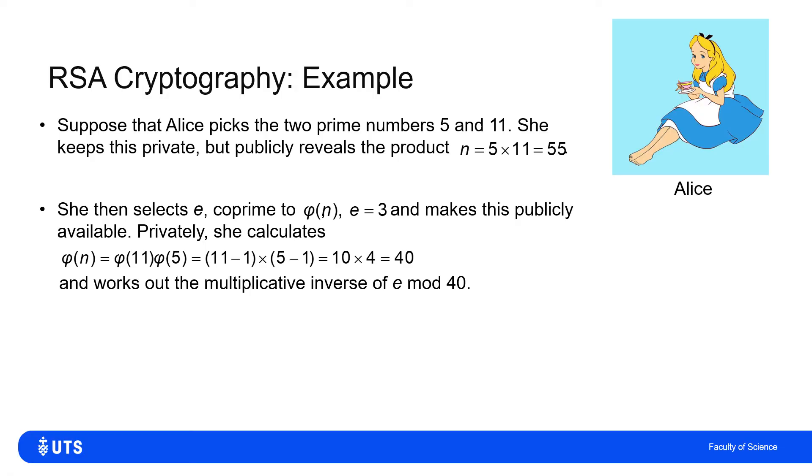But Alice, by knowing the two primes p and q, can also work out phi of n. It's the product of two primes. So phi of n is phi of p times phi of q, which is p minus 1 times q minus 1. But in this case, it's 10 times 4 is 40.